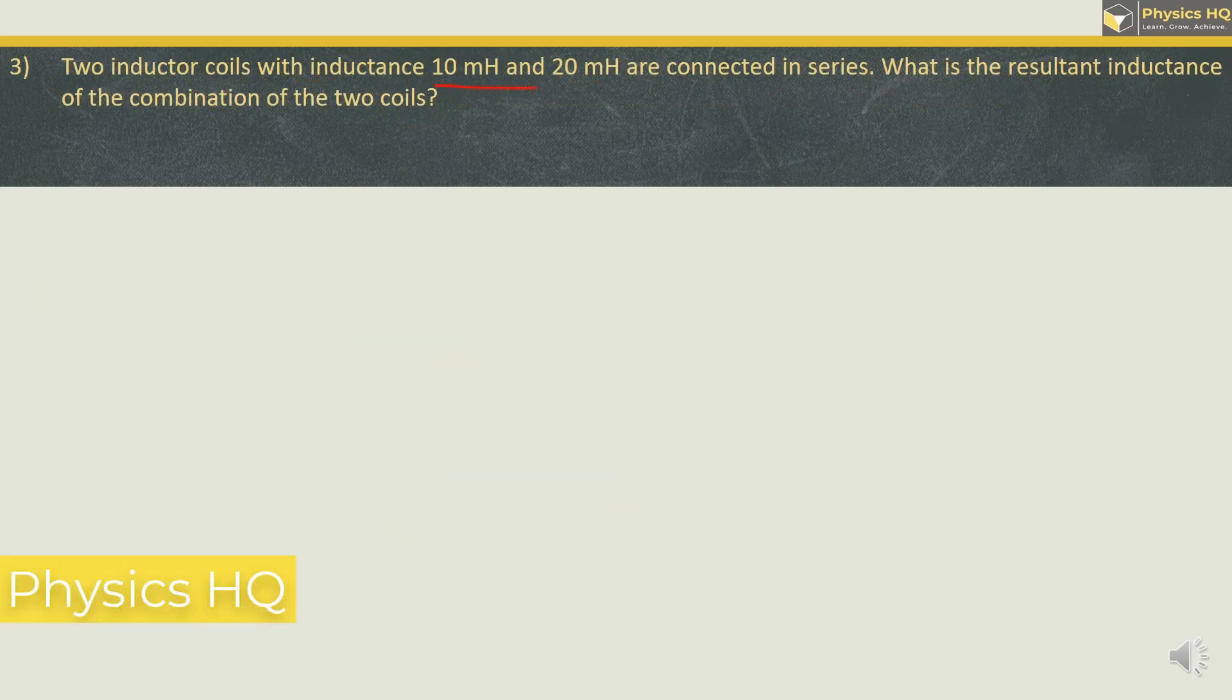Two conductor coils with inductance 10 mH and 20 mH are connected in series. What is the resultant inductance of the combination of the two coils? Options are 20, 30, 10 or 20 by 3 mH.